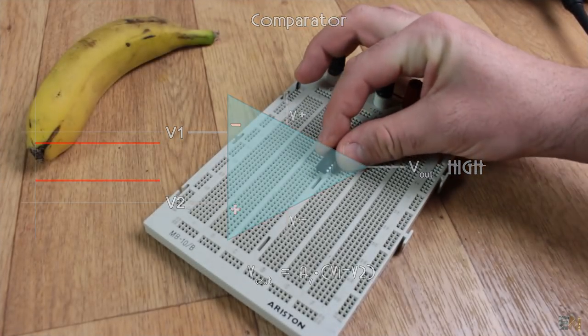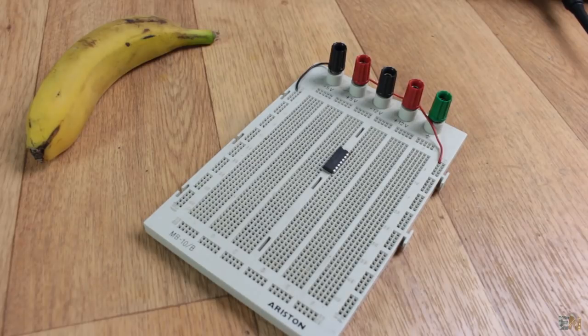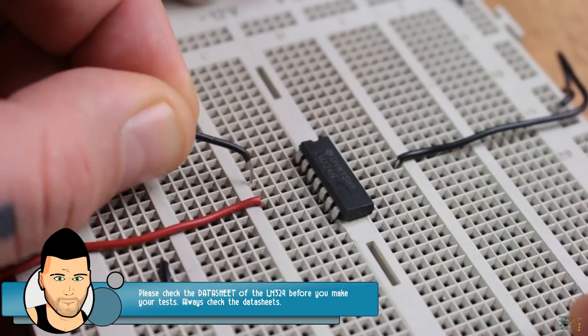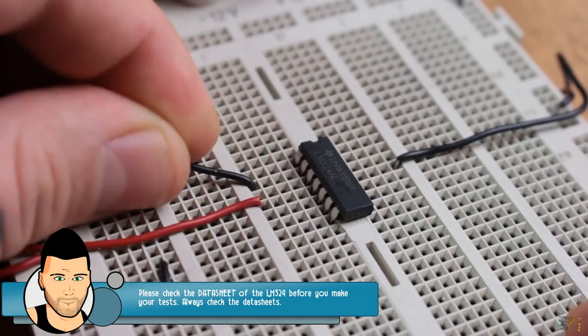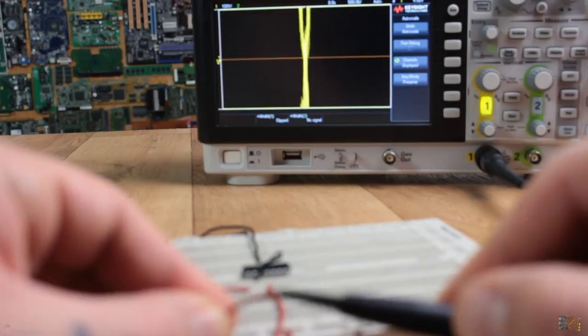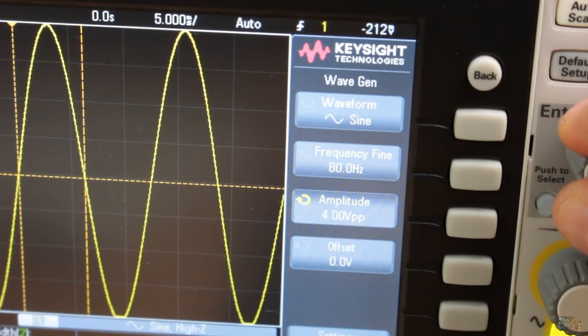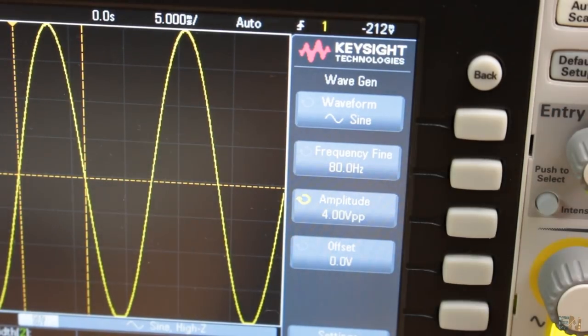Now, I place the LM324 on the breadboard, and supply positive and negative 12V to the supply pins. I connect ground to the negative input of the amplifier, and the output to my oscilloscope. At the positive input, I will apply a sine wave, with values from minus 2 to 2V.